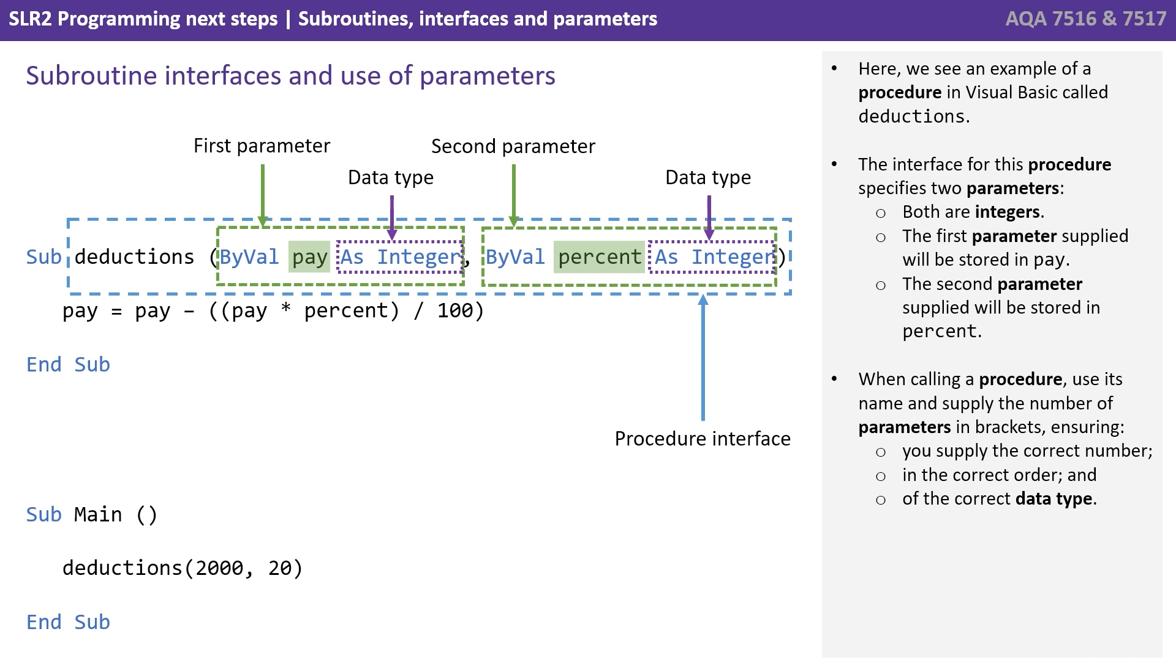When calling the procedure, we use its name and supply the number of parameters in brackets, ensuring you supply the correct number of parameters, in the correct order, and of the correct data type.